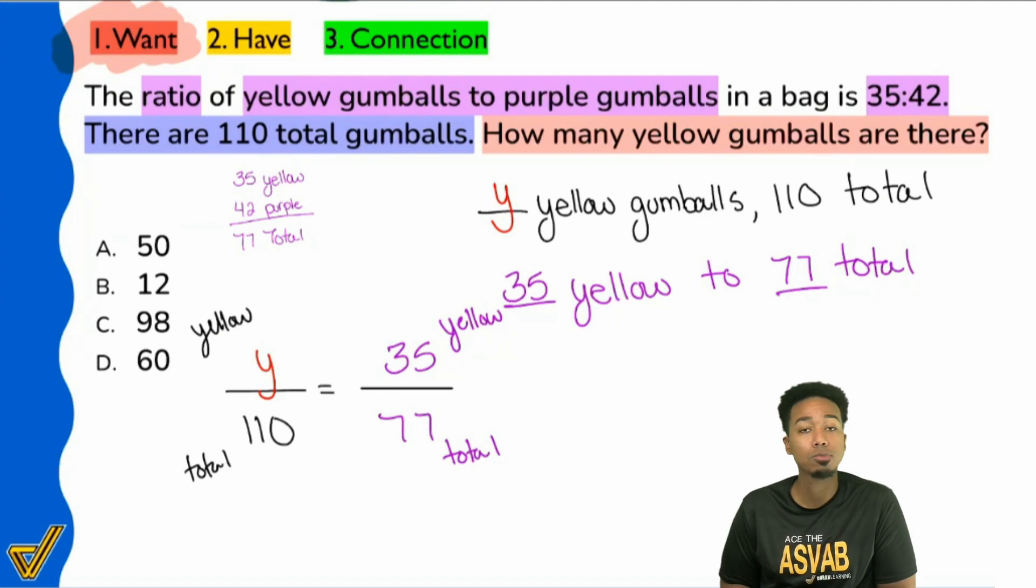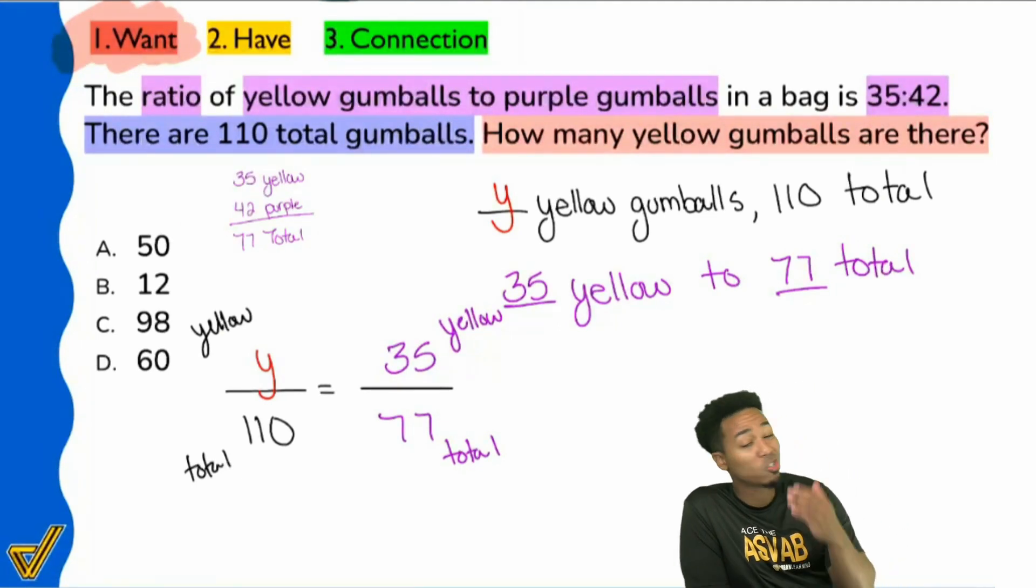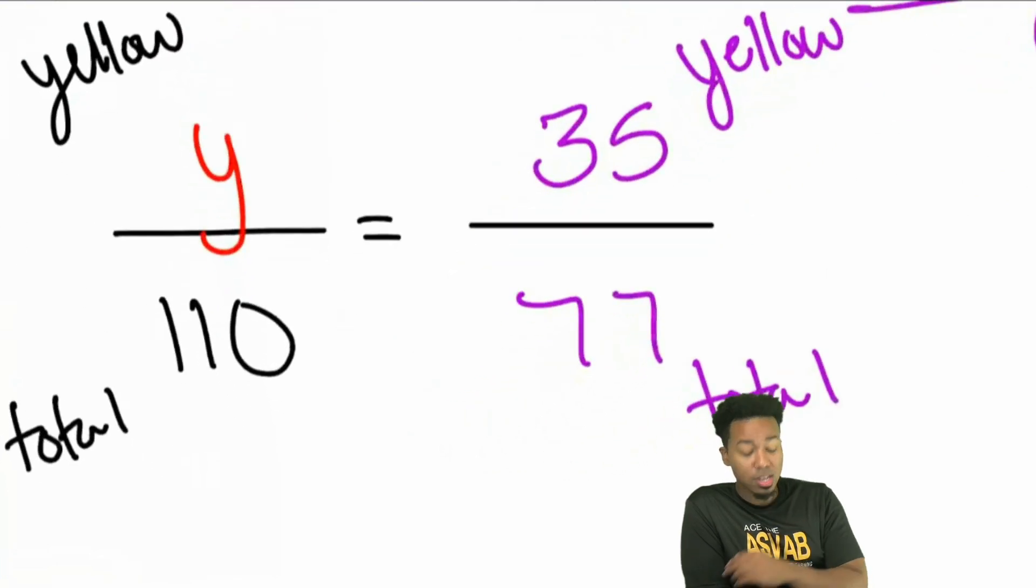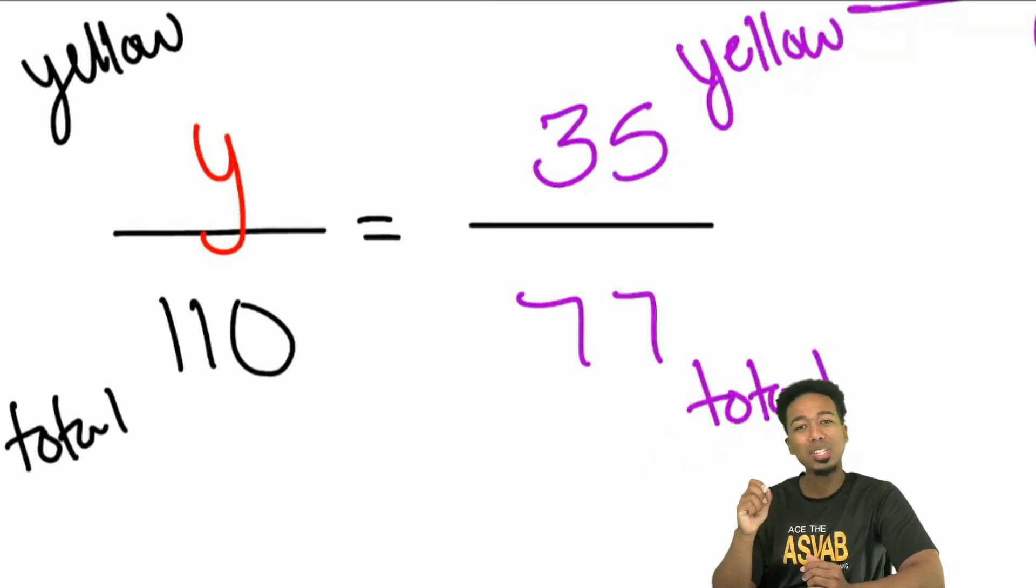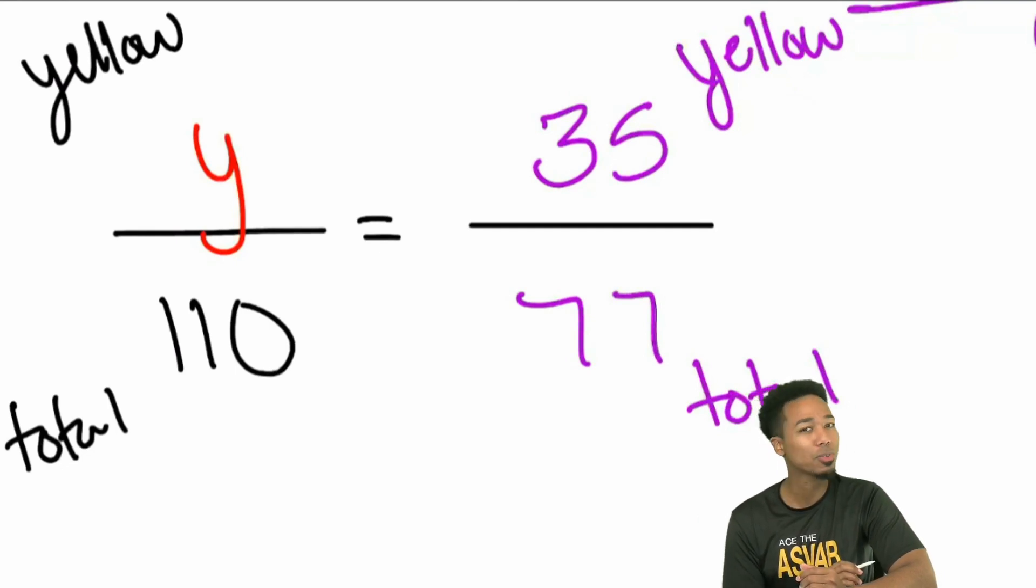Absolutely. All we got to do now is just cross multiply and divide. With the exception being, just like I warned you in the previous question, this time we got to do 35 times 110. Do I look like I have the time to spend calculating 110 times 35? I mean, actually, yeah. I mean, I had four years to develop the best ASVAB program in the nation, so I got time. But do I want to do this? No, I absolutely don't. So whenever you can find a shortcut, try to find one. And especially since you're dealing with two fractions, what's that S word you can always do when it comes to dealing with fractions? Simplify.